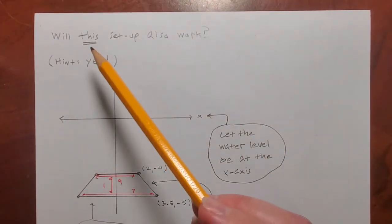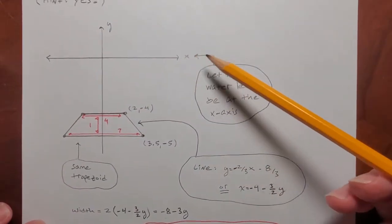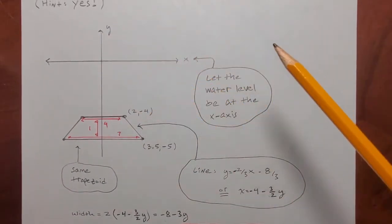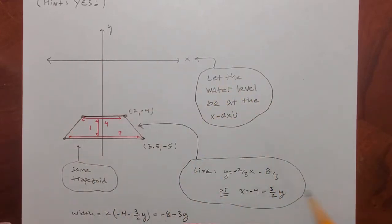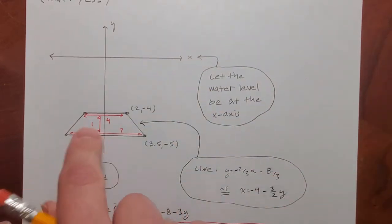Oh, will this setup also work? Hint, yes, it will. But I could have done it like this. So I could have put the water level on the x-axis. Okay. And that would put the plate, you know, down on the part of the negative y-axis where all the y-coordinates are negative.